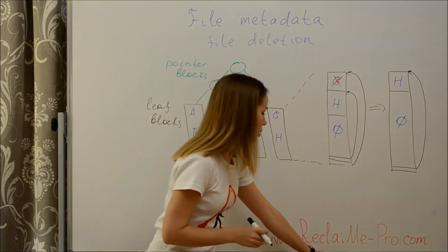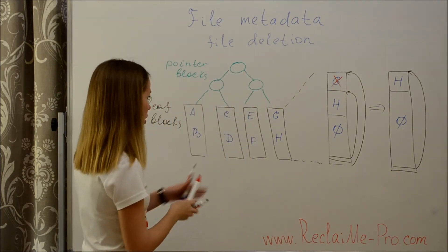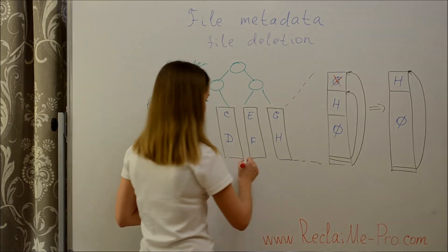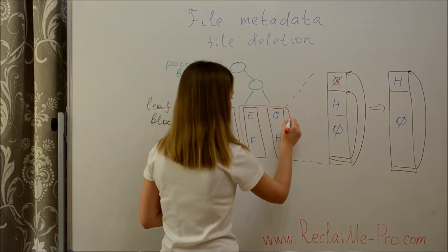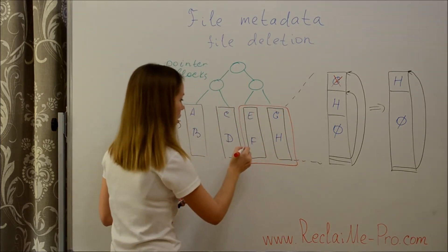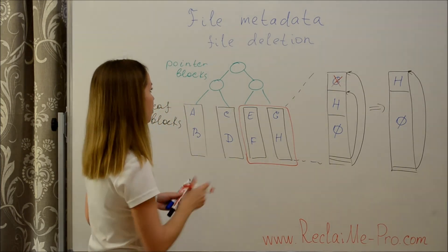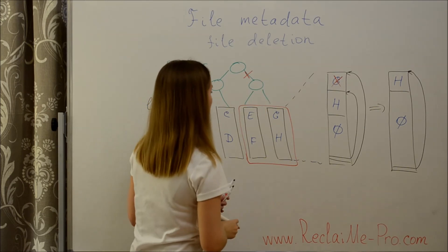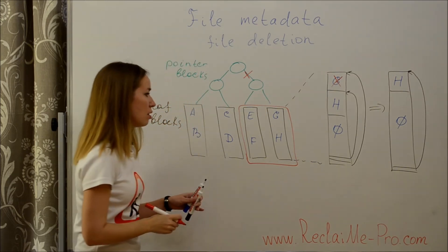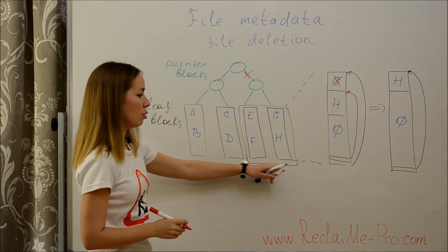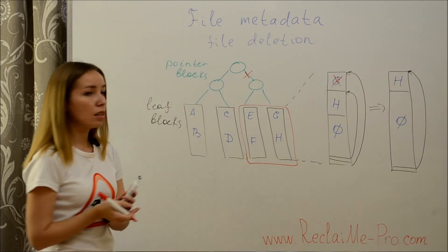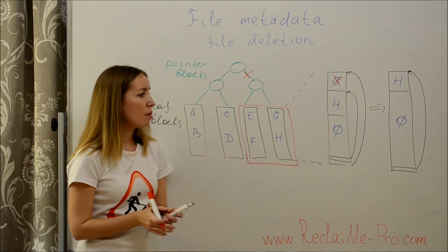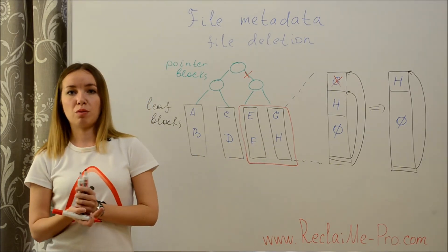Now let's imagine that we need to delete E, F, G, and H records. In this case, a file system just deletes the pointer rather than erasing these blocks. In this case, undelete for metadata stored in these blocks is still possible.